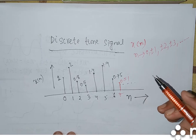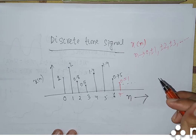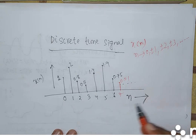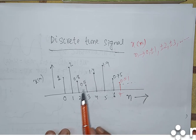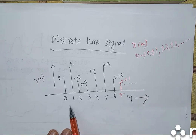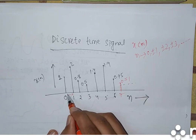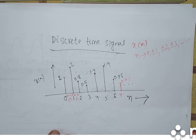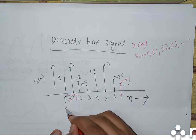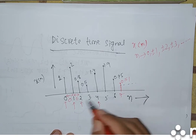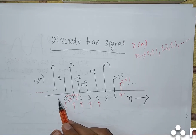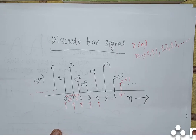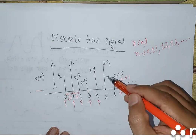This is a discrete time signal. According to our definition, discrete time signal is defined at discrete values of time. This discrete time signal is defined only for 0, ±1, ±2, ±3, like this. But in between 0 and 1, the signal does not exist — it is 0. In between 1 and 2, again it is 0. So this discrete time signal is not defined for all values of time, only at discrete instants of time: 0, 1, 2, 3, 4, ..., -1, -2, -3. So it is not continuous by nature, it is discrete by nature.